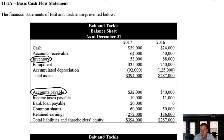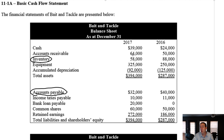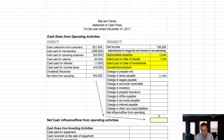Is accounts receivable rising good or bad for cash? It's bad for cash. Think of the counter example: if accounts receivable is falling, it means we're collecting our money. Accounts receivable rising means we're not collecting what's owed to us, and that's bad for cash. Going from $50,000 to $64,000 harms our cash flow by $14,000 — it's a negative $14,000.